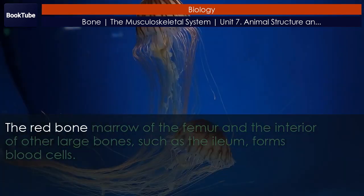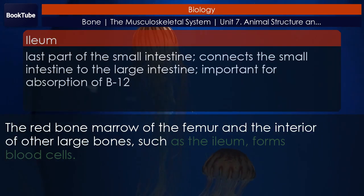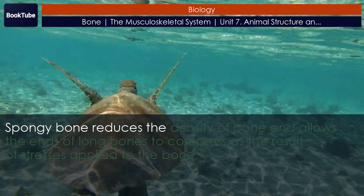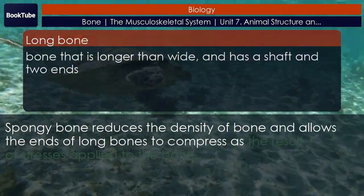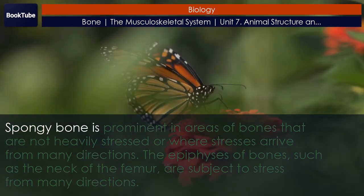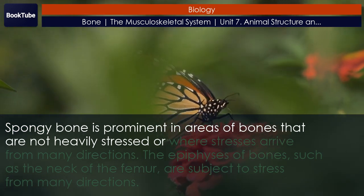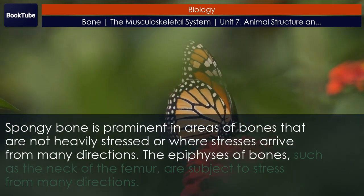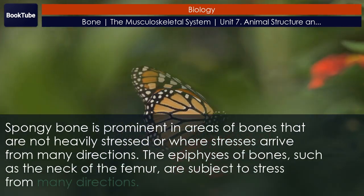The red bone marrow of the femur and the interior of other large bones, such as the ileum, forms blood cells. Spongy bone reduces the density of bone and allows the ends of long bones to compress as the result of stresses applied to the bone. Spongy bone is prominent in areas of bones that are not heavily stressed or where stresses arrive from many directions. The epiphyses of bones, such as the neck of the femur, are subject to stress from many directions.